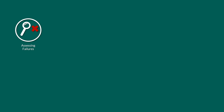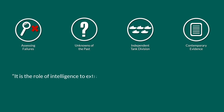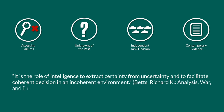The next problem is the general ambiguity of evidence. A major problem with assessing failures from the past is hindsight. Since we know not only how certain events worked out, we also live in a world where many unknowns of the past are now fundamental beliefs that were not certain back then. For instance, we know that organizing tanks into independent divisions is the right thing to do, but in the 1930s there were just a few people who believed that, and basically no evidence at all to support their views. Intelligence inherently operates in an environment of ambiguity — it is the role of intelligence to extract certainty from uncertainty and to facilitate coherent decisions in an incoherent environment.